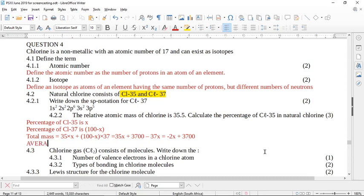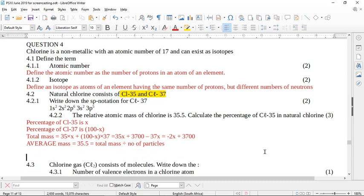So my average mass, my average mass is 35.5. That's what the question is telling us. And this is going to be equal to the total mass divided by the number of particles. So now in this, because it's a percentage, we assume that there's 100 particles. So 35.5, this is just algebra people. 35.5 equals minus 2X plus 3700. And then this will be divided by the number of particles. Divided by 100 particles.